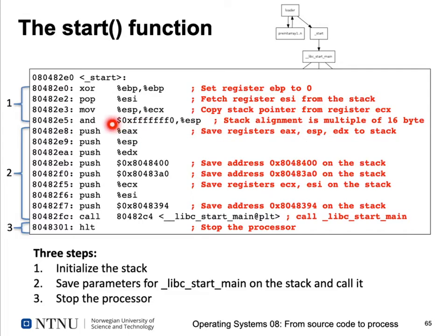There is also alignment: the least significant four bits of the stack pointer are masked out to ensure the stack starts at a multiple of 16 bytes — an address evenly divisible by 16. Part two of the executable saves parameters for libc_start_main on the stack: it pushes registers like eax, esp (the stack pointer), and edx, saves an entry point address and additional registers, and finally calls libc_start_main. If this function ever returns — which it shouldn't — the processor is halted to ensure deterministic behavior.